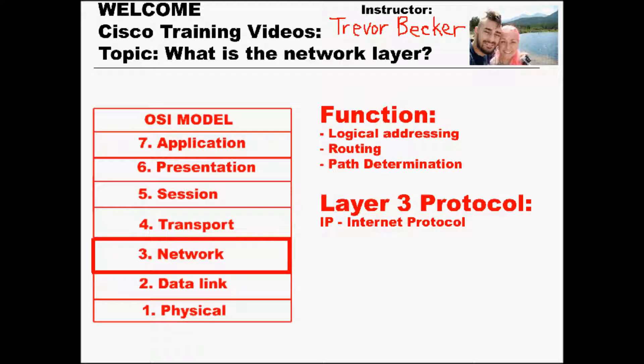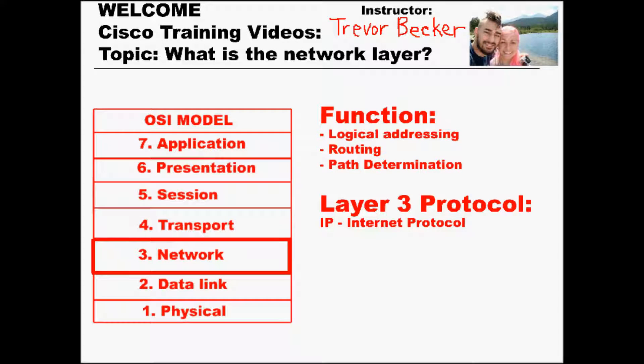Those three functions are logical addressing, routing, and path determination. The type of addresses that exist at layer 3 are IP addresses. IP, which stands for Internet Protocol, is considered a logical address since it's configured in software and it can be changed.